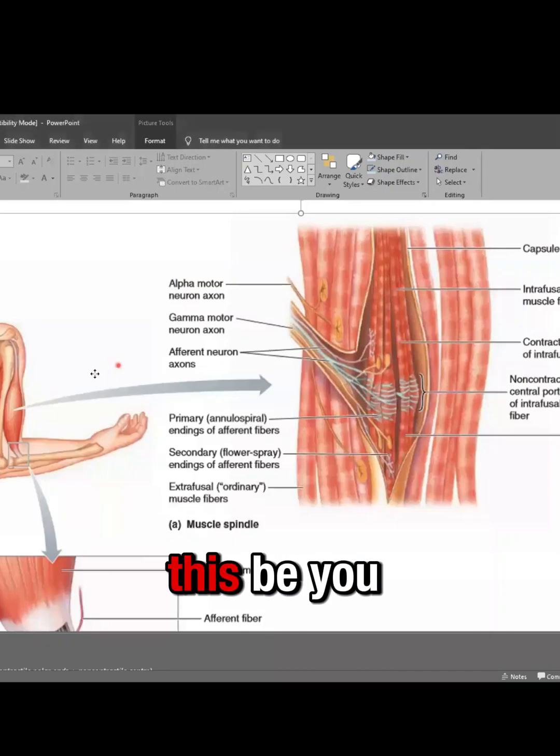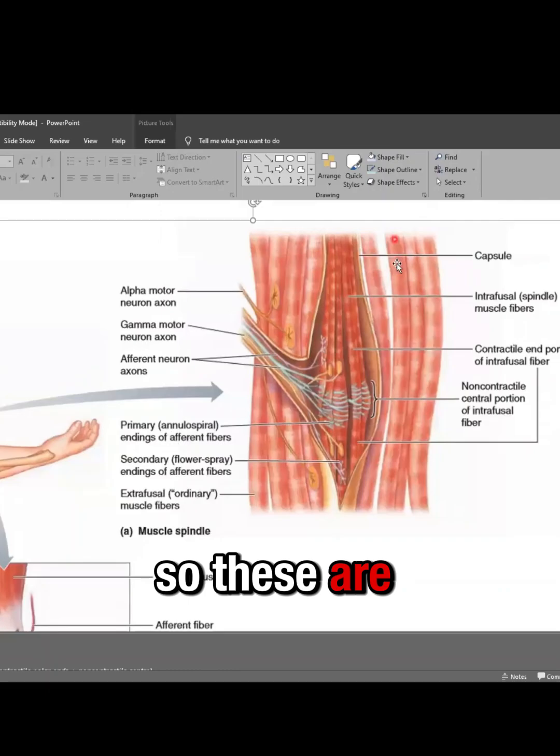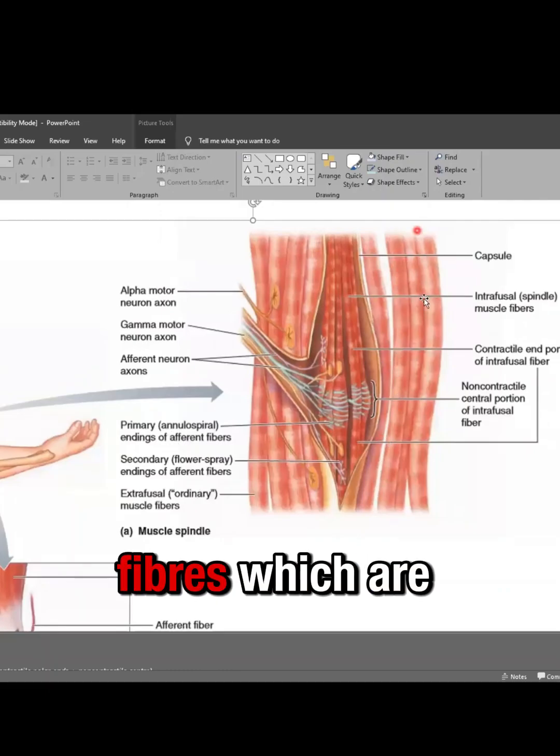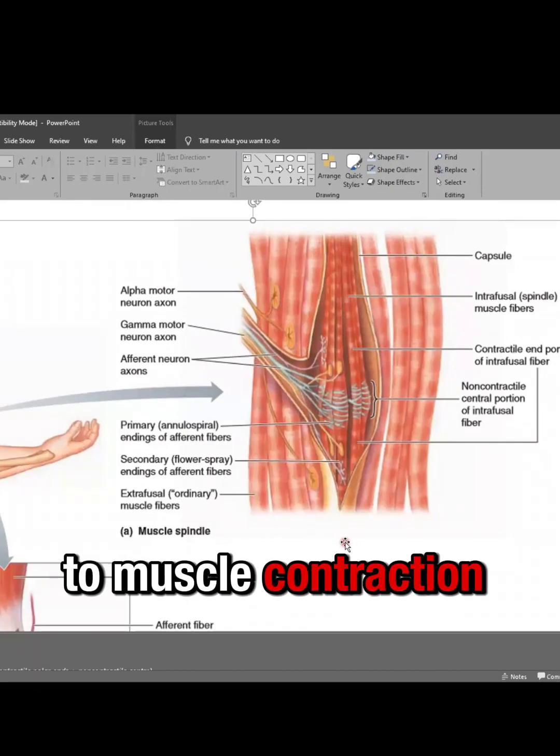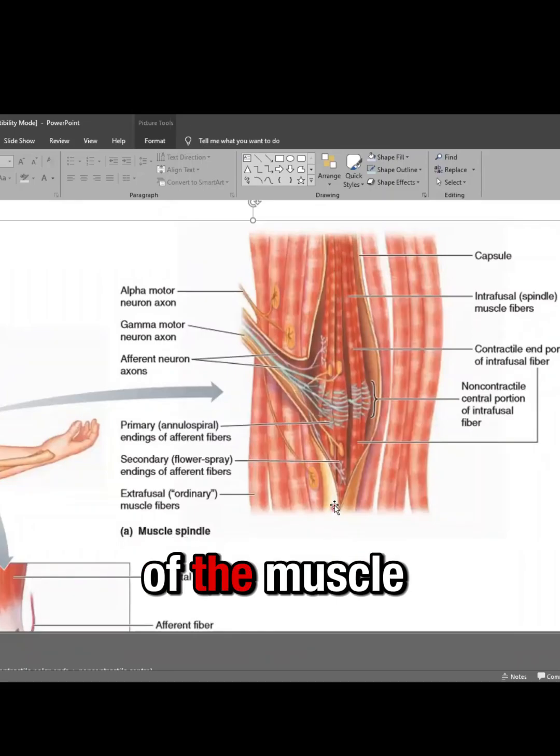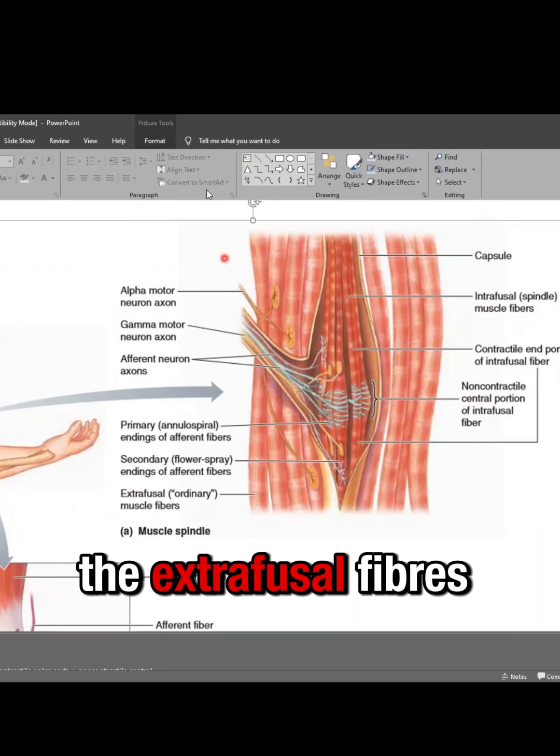So these are those fibers, which are running through and through and minding their own business. They are related to muscle contraction, the contractile element of the muscle. We call them the extrafusal fibers.